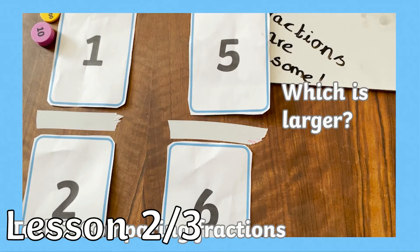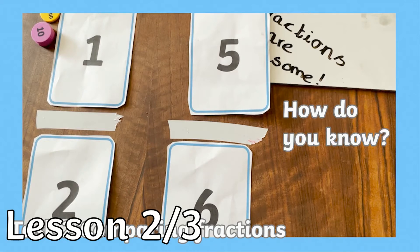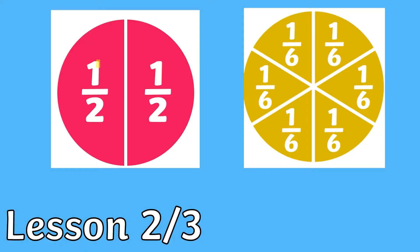In lesson two, Amy teaches your children how to solve problems involving fractions. If you said five sixths, you were correct — this is the larger fraction. You can see here, looking at this representation, that I've shaded in one half. And when you compare it to another circle split into six equal parts, you can see that one half is much smaller than five sixths, because the equivalent of one half would be three sixths.